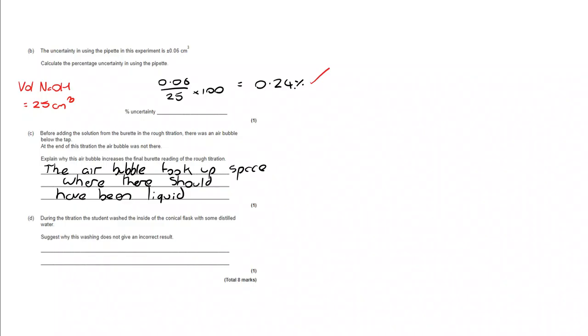And finally, during the titration, the student washed the inside of the conical flask with some distilled water. Suggest why this washing does not give an incorrect result. Well, you might look at it and think we are diluting it, but actually we are not changing the number of moles of alkali in that reacting vessel, in that conical flask.